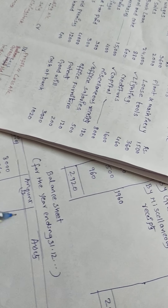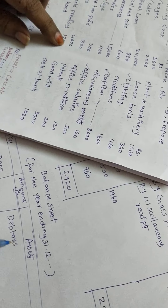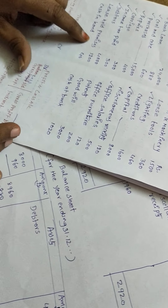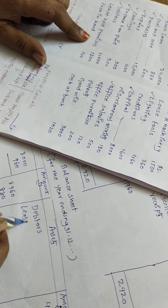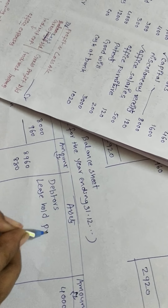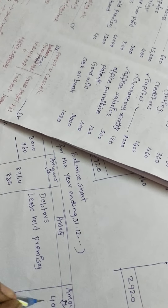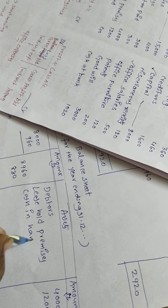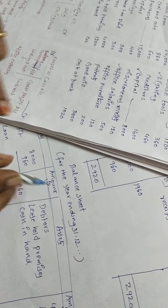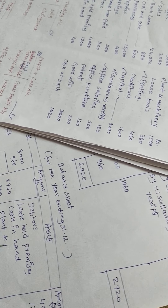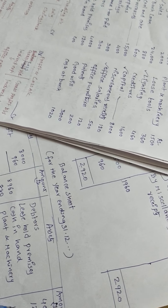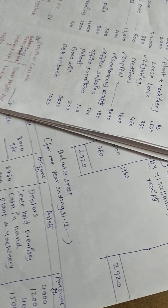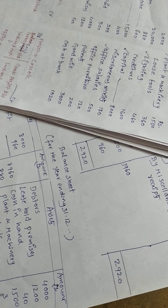Debtors are an asset: 4,000. Leasehold premises means business area — also an asset: 1,200. Cash in hand: 40 rupees. Plant and machinery: 1,500. Loose tools — spare parts — also an asset: 360.